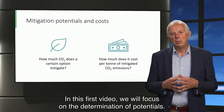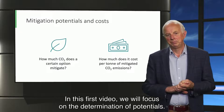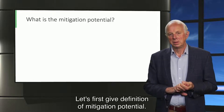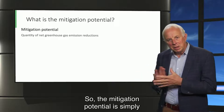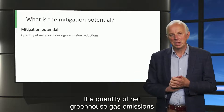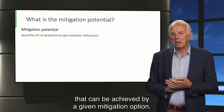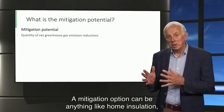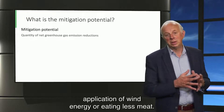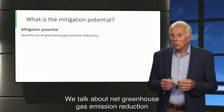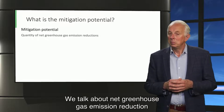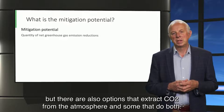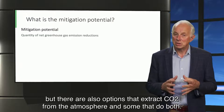In this first video we will focus on the determination of potentials. The mitigation potential is simply the quantity of net greenhouse gas emissions that can be achieved by a given mitigation option. A mitigation option can be anything like home insulation, application of wind energy, or eating less meat. We talk about net greenhouse gas emission reduction because not only are there options that reduce CO2 emissions, but there are also options that extract CO2 from the atmosphere, and some that do both.